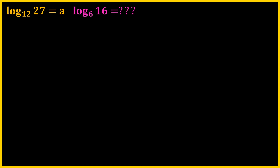The first and most important property that I'm going to use in this video is the change of base property, or the change of base formula. Basically, whenever we have log x with base y, we can rewrite it as log x over log y, and the base can be any positive number such as z, but usually we consider z as 10, because when the base is 10, we don't need to write it.